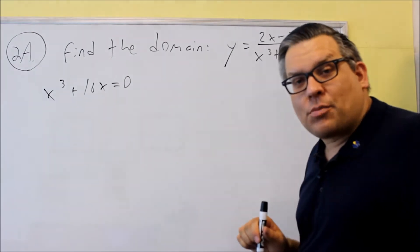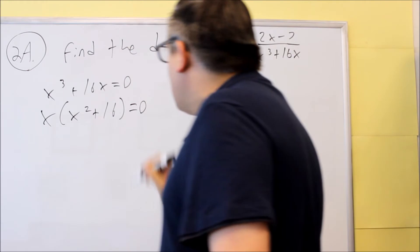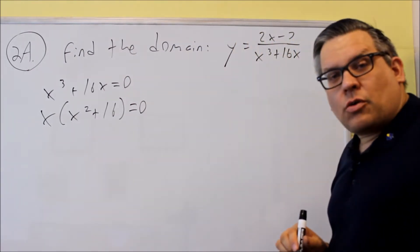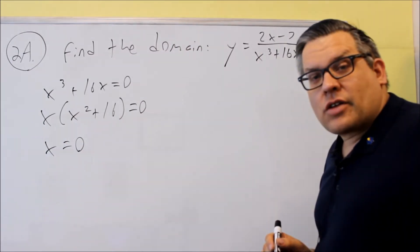I'm going to look for a common factor I can pull out here. That's going to be an x. And I get x squared plus 16 equals zero. And then I'll set both of them equal to zero. So I already know one of my answers is going to be x is equal to zero.